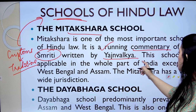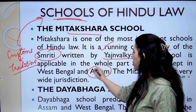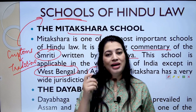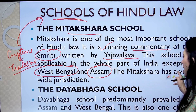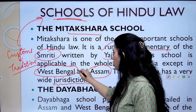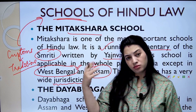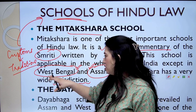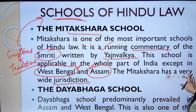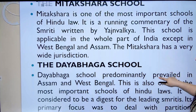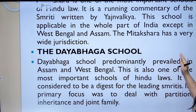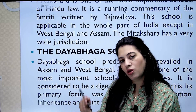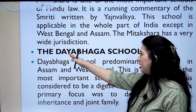The Mitakshara school is applicable in the whole part of India except in West Bengal and Assam. The Mitakshara has a very wide jurisdiction, kyunki sirf those two states mein it is not applicable — baaki, throughout the country, this school, this principle, this thought holds good. Next is the Dayabhaga school. Dayabhaga school predominantly prevailed in Assam and West Bengal — sirf woh do states aise thay jahan pe Mitakshara is not valid, aur wahan pe Dayabhaga school of thought follow hota hai.